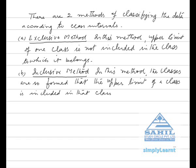There are two methods of classifying data according to the class intervals. A: Exclusive method - in this method, the upper limit of one class is not included in that class to which it belongs. B: Inclusive method - in this method, the classes are so formed that the upper limit of a class is included in the particular class in which it occurs.